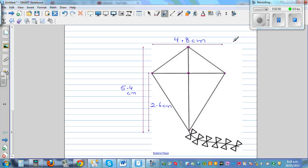The horizontal distance is 4.8. The vertical distance is 5.4. Basically, you don't need this. If you know this and this, you can find the area of the kite.